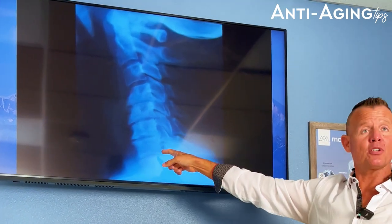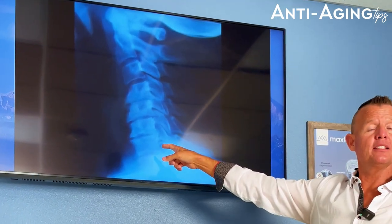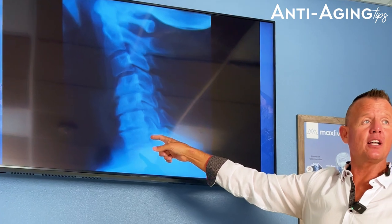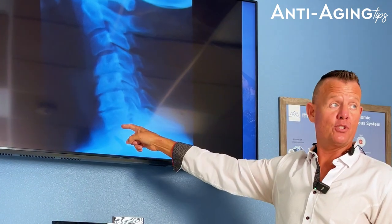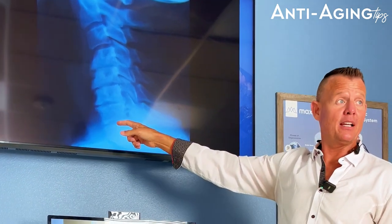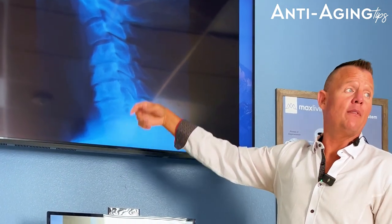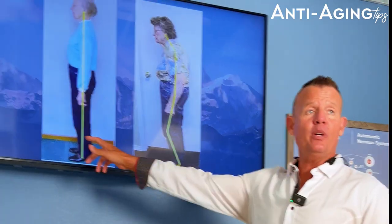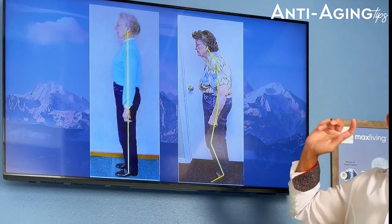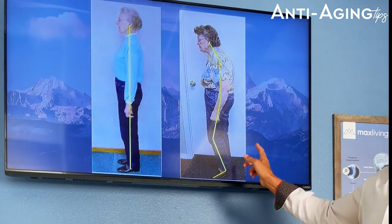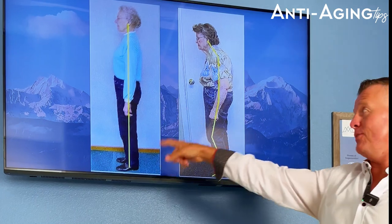The high blood pressure caused by that — guess what the doctor is not going to look at? That. But they'll sure give a pill for it. Or acid reflux or whatever else. Case in point — who's older? Looks like this one. That one is actually older, and she's been going to a chiropractor since birth, which is very rare.